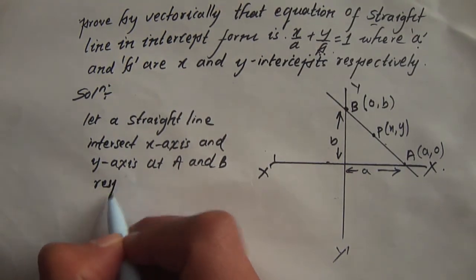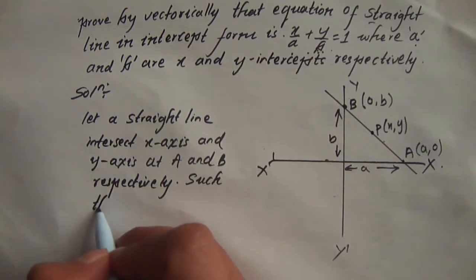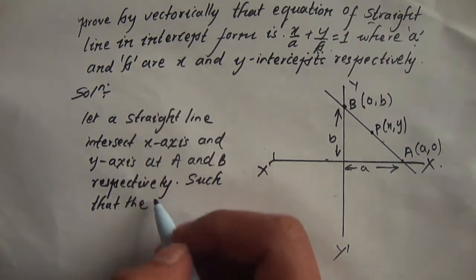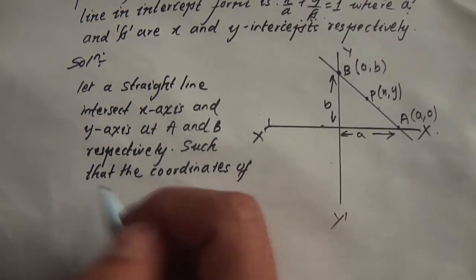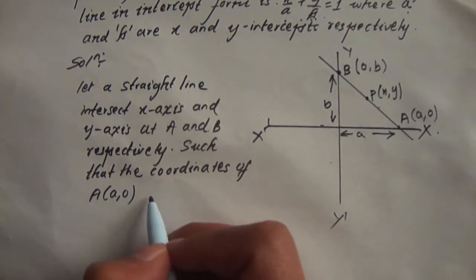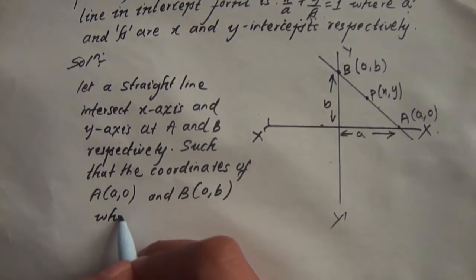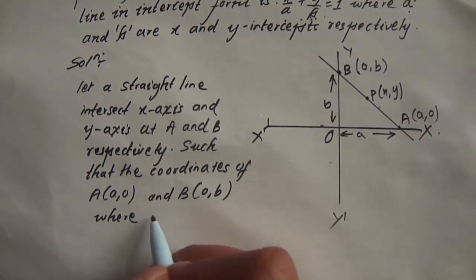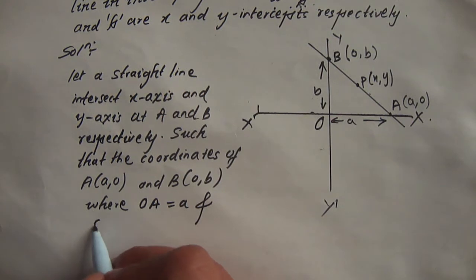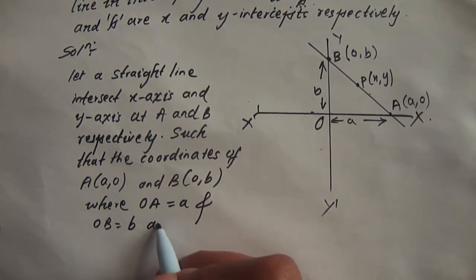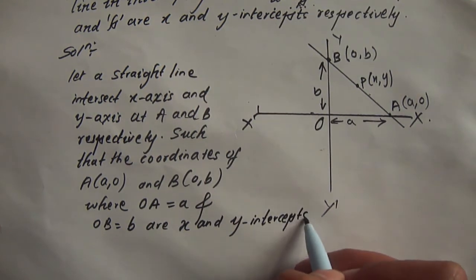So, the straight line intersects respectively such that the coordinates of A are (a, 0) and B are (0, b), where O is the origin, and a and b are the x and y intercepts respectively.